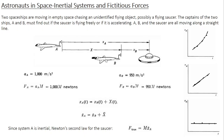Now, how do you make sure that the frame you are in is an inertial frame? What the captain of spaceship A does is switch off the engine, so spaceship A stops moving. Any frame of reference which is at rest is an inertial frame, so now frame A is inertial. The force measured from frame A, M·X_A double dot, can be called the true force, because the force you measure in an inertial frame is always the true force.